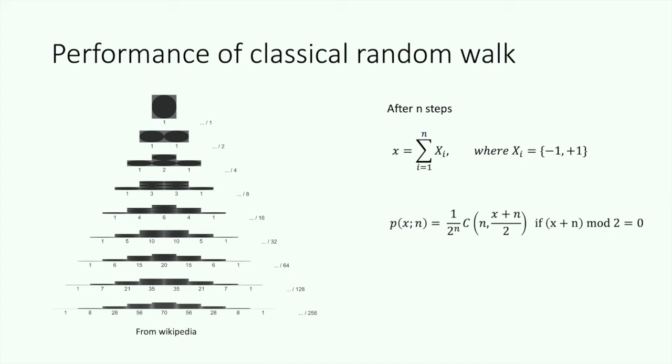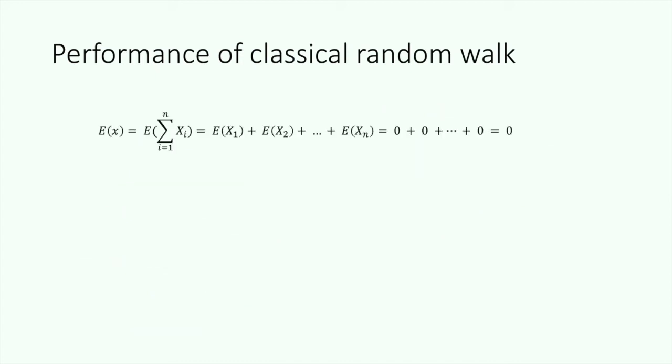And then we will see that the expectation of x is just 0, and the expectation of x square, the variance of this distribution, is equal to n. So finally, we get the answer that the standard deviation is proportional to square root of n. We know that the standard deviation is a measure of how spread out numbers are. So here we can use it to describe how fast the atom moves.